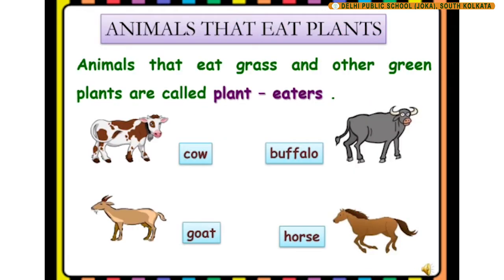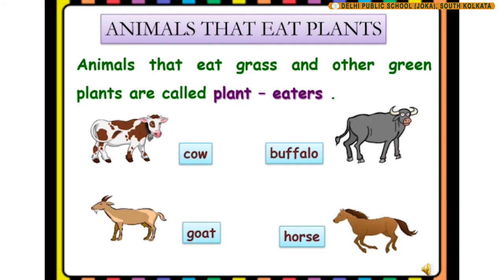In this slide, we can see animals that eat plants. Animals that eat grass and other green plants are called plant eaters. Cow, buffalo, goat, and horse are plant eater animals.